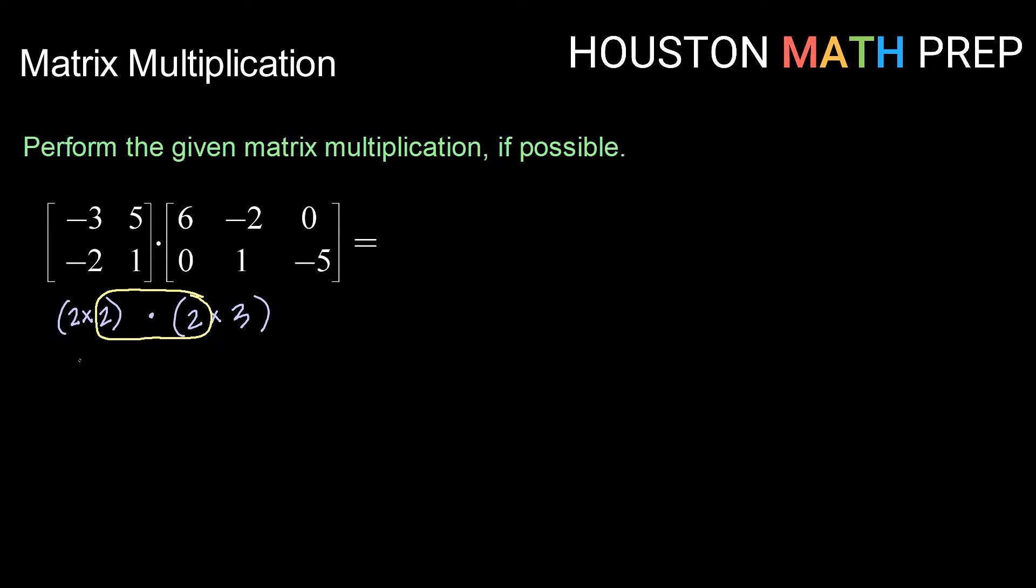To figure out the dimensions of our result, we look to the outer dimensions here. So since we have 2 and 3, our result will be a matrix with one, two rows, and three columns. I'm going to go ahead and set up a matrix with 2 rows and 3 columns and be sure to give myself lots of space so that I can show my work.